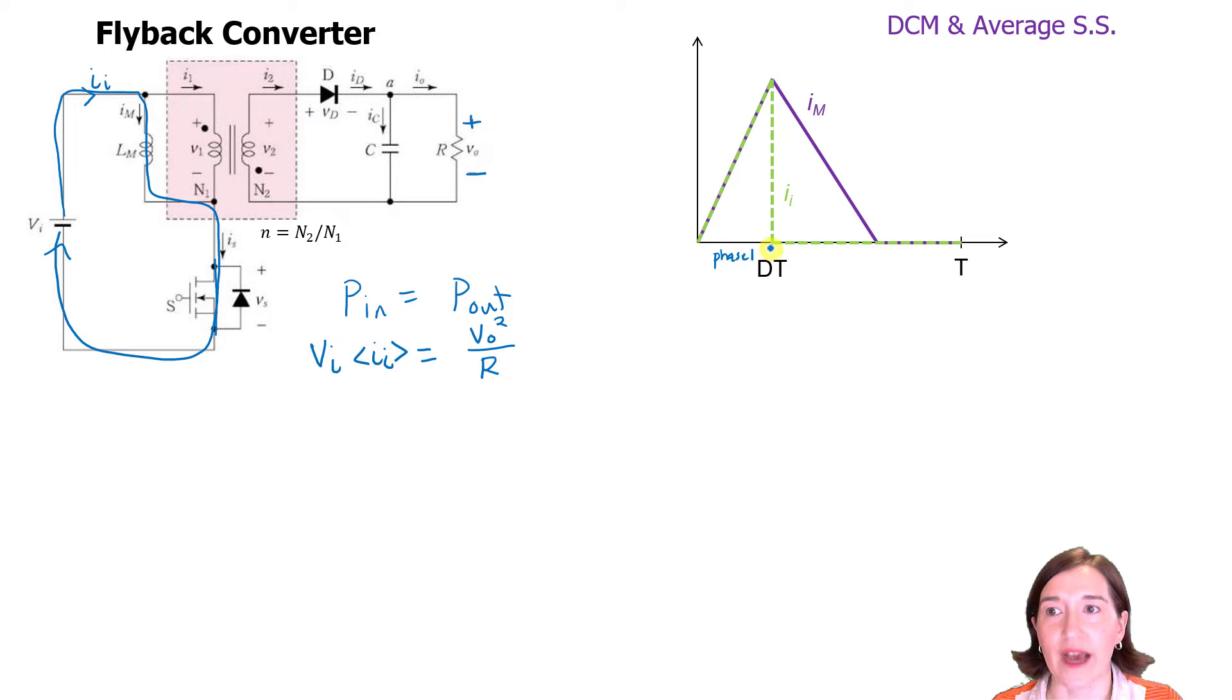And after that, when the switch opens again, when it opens, there's no way that current can flow through this input current. So it's going to be just zero until the end of the period. So this would be the rest of the phase here.